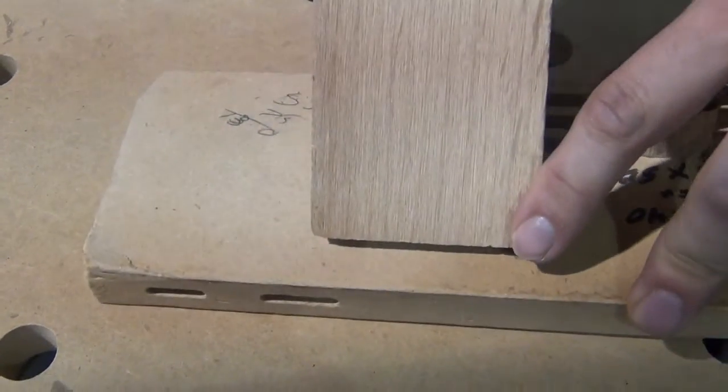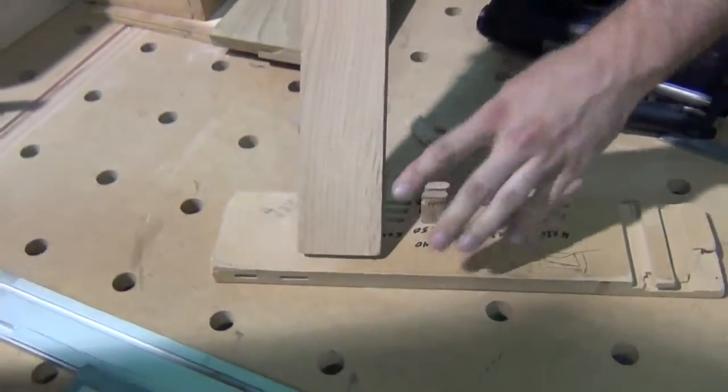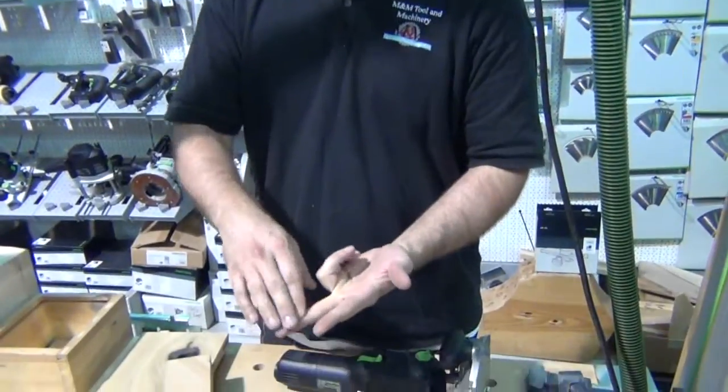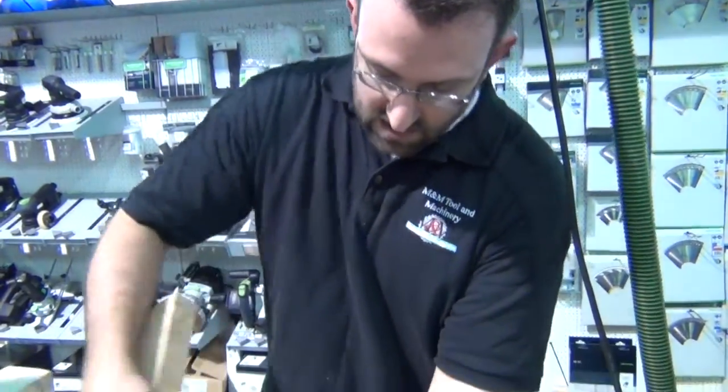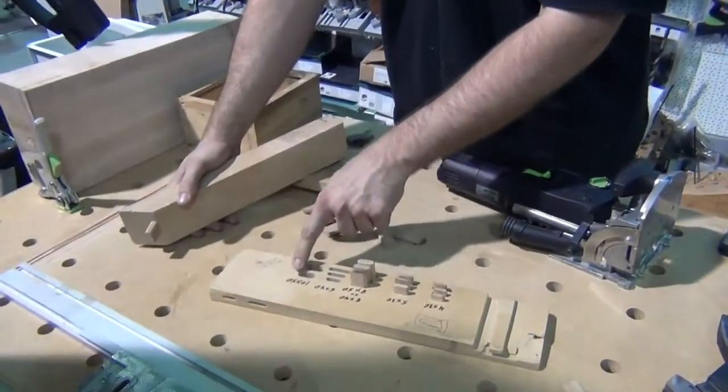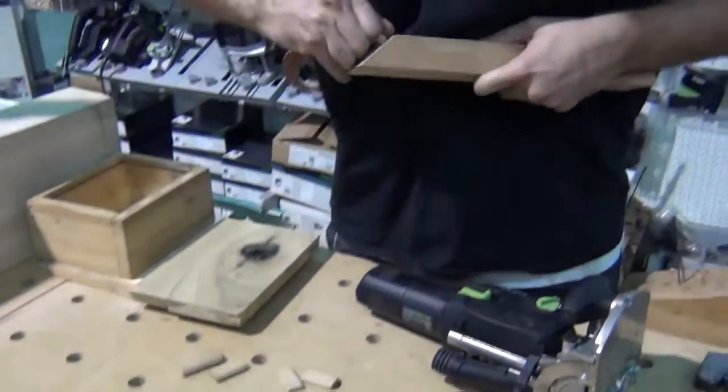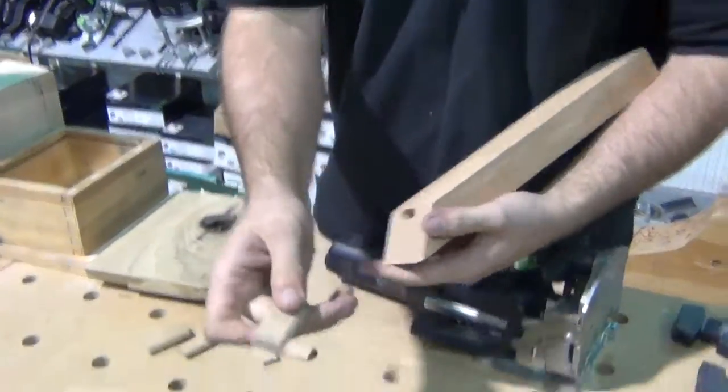So cool thing here is rather than doing your traditional mortise and tenon joint where you need to cut the mortise and then cut the tenon using a table saw, chisels, mortiser or whatever you're going to do, you're just going to save a ton of time by cutting two mortises and then putting in what's called a floating tenon, which is these.